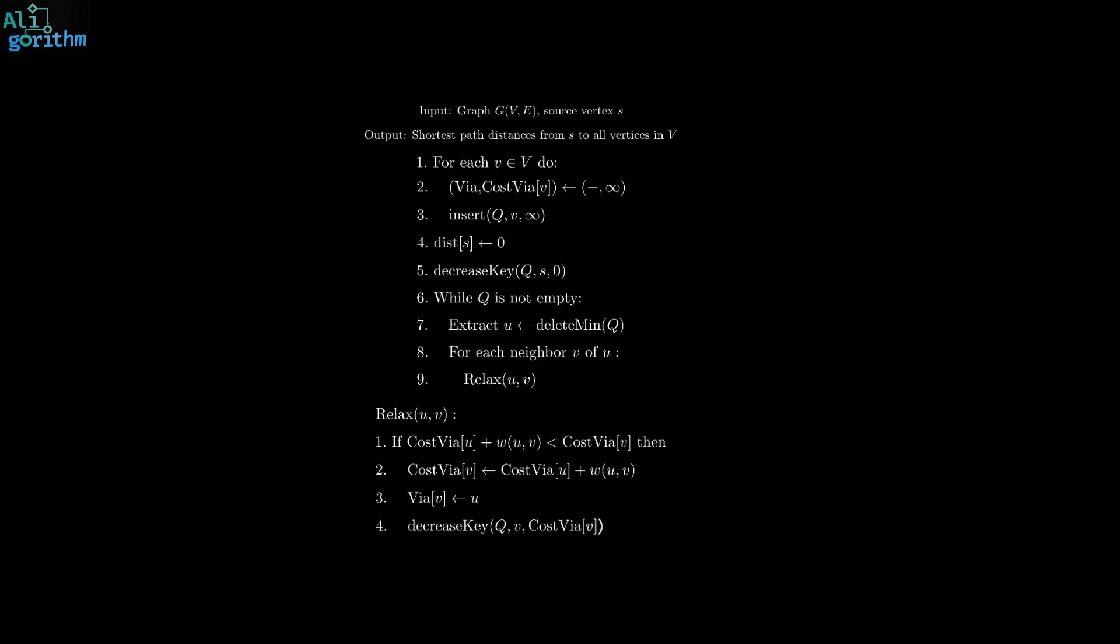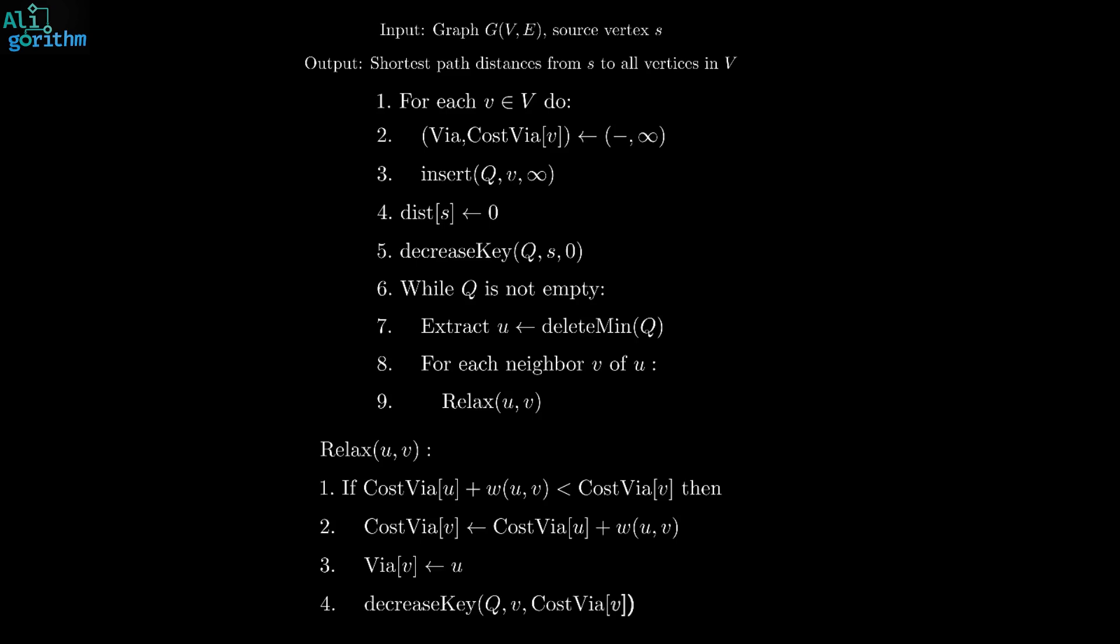In this video, we will explain this discovery known as Dijkstra's algorithm, which is the most well-known method for finding a shortest path from one point to another. In fact, it's the algorithm used by most of today's navigation systems.